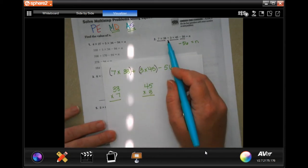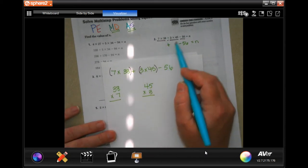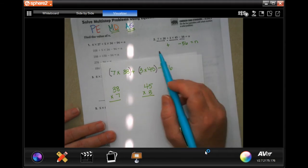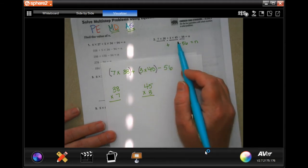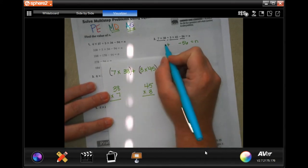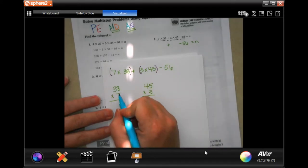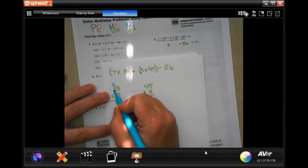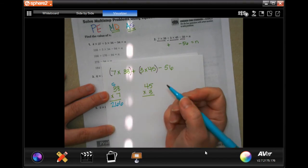What I did here is I rewrote the rest of it. So my plus sign and my minus 56 and equals n, those didn't go anywhere just because I'm going to solve these two. So now I'm going to go ahead and solve those two and then I'll go ahead and fill them in. So seven times eight, 56, carrying my five, seven times three is 21, plus five, 26.